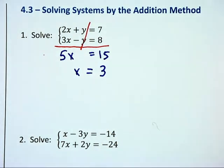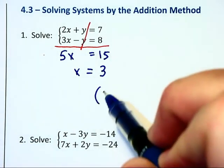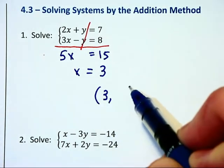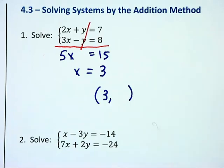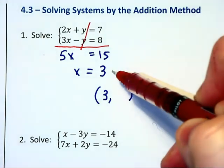Now you can't just leave the answer there because our answer is supposed to be a coordinate point with x being 3 and we need the missing y value there. So we're going to take this value of x equals 3 and substitute it into either equation.